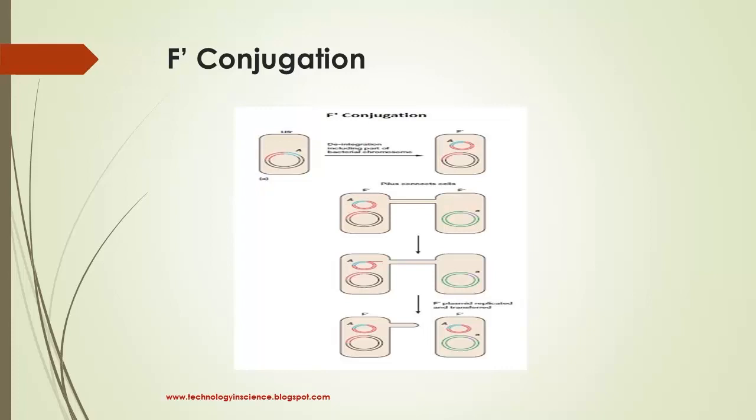The F prime F minus conjugation is virtually identical with F plus F minus mating. Once again, the plasmid is transferred, but usually bacterial genes on the chromosome are not.